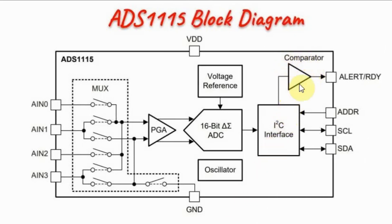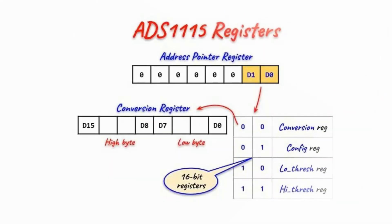The ADC also has a programmable digital comparator that will issue an alert signal via the alert pin whenever the 16-bit result exceeds some pre-assigned threshold values. The programmable registers of the ADS1115 are: address-pointer register, conversion, config, low-threshold, and high-threshold registers.